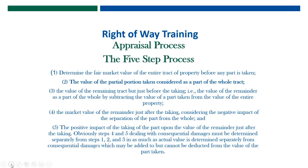Steps four and five are dealing with consequential damages and must be determined separately from steps one, two, and three, inasmuch as the actual value is determined separately from the consequential damages, which may be added to but cannot be deducted from the value of the part taken. So the five-step process is: value the property in its before state — the entire property; value the part being acquired; value the remainder in the before; appraise the remainder in the after. If there are any differences in the value of the remainder before and after, then there are consequential damages.